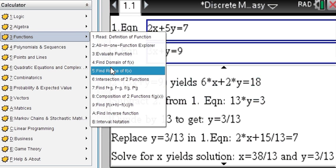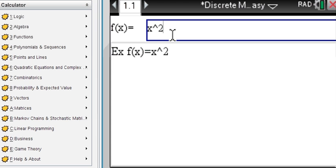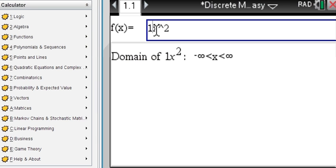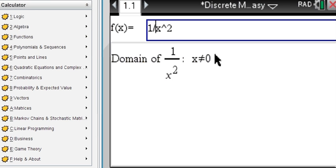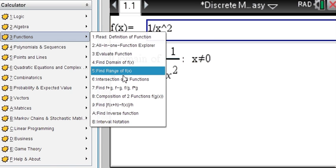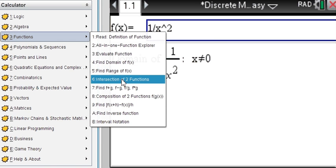Functions. Say you want to find the domain of a function. Just enter the function, x squared. Well, that's all real numbers. Or what about 1 over x squared. Domain is all real numbers but 0. So very handy tool. Same with range, same with intersectional functions, etc.